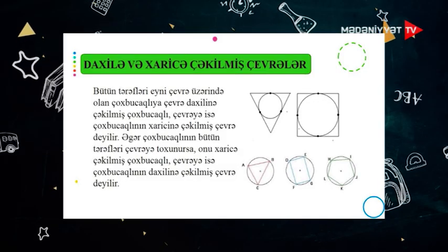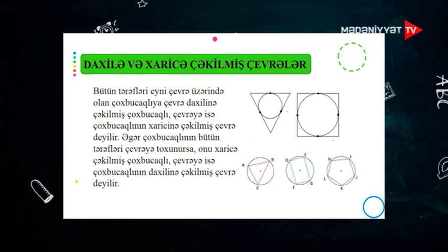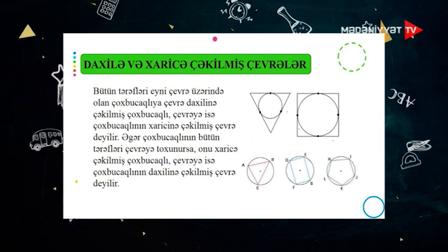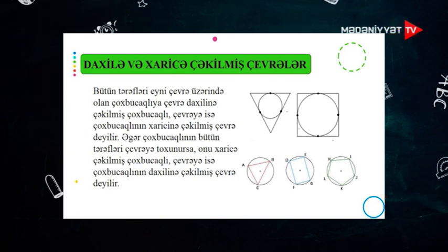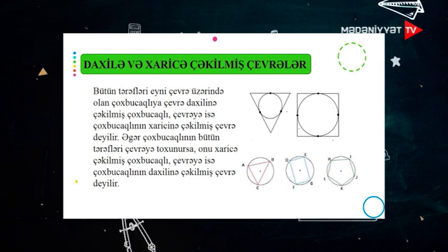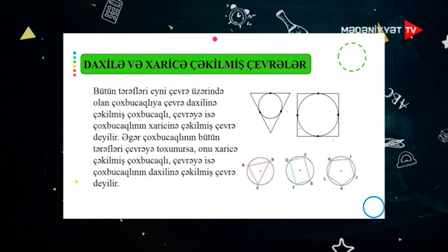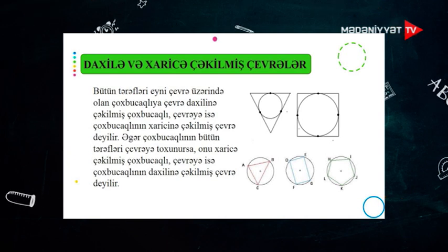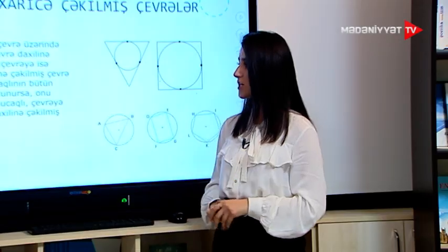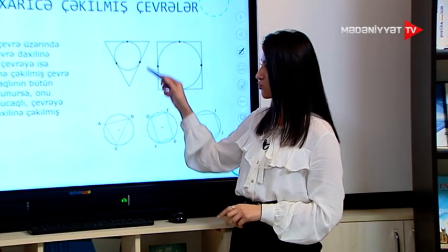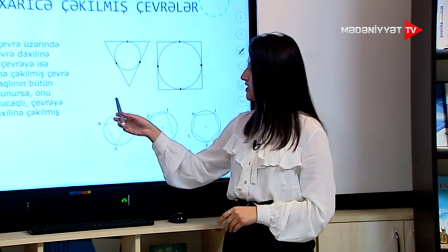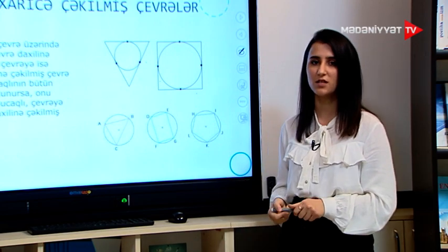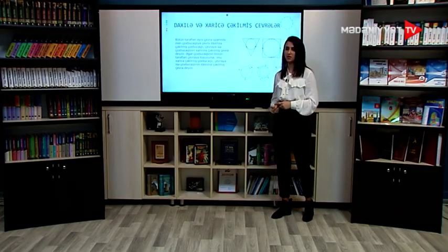İndisə biz daxilə və xaricə çəkilmiş çevrələr haqqında danışacaq. Bütün tərəfləri eyni çevrə üzərində olan çoxbucaqlıya çevrə daxilində çəkilmiş çoxbucaqlı, çevrə isə çoxbucaqlının xaricindən çəkilmiş çevrə deyilir. Bu şəkillərimizdə görürük ki, ABC üçbucaqlı çevrə daxilində çəkilmiş üçbucaqdır; DYGF dörd bucaqlısı çevrə daxilində çəkilmiş dörd bucaqlıdır; LHİRK beş bucaqlısı çevrə daxilində çəkilmiş beş bucaqlıdır. Əgər çoxbucaqlının bütün tərəfləri çevrəyə toxunursa, onu xaricə çəkilmiş çoxbucaqlı, çevrə isə çoxbucaqlının daxilinə çəkilmiş çevrə deyilir. Burada çevrə üçbucağın daxilinə çəkilmiş çevrədir; burada isə çevrəmiz dörd bucaqlının daxilinə çəkilmiş çevrədir.